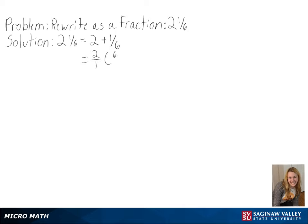To get a common denominator, we can multiply 2 by 6 over 6, since that is equal to 1.